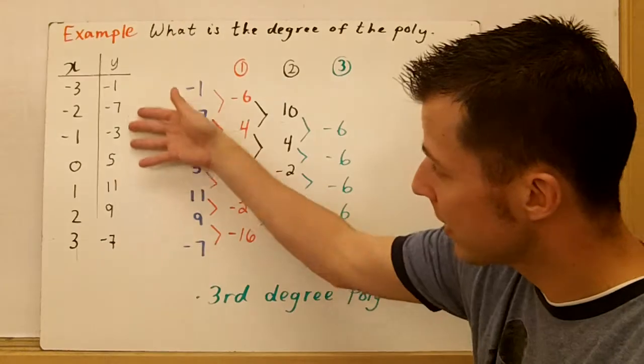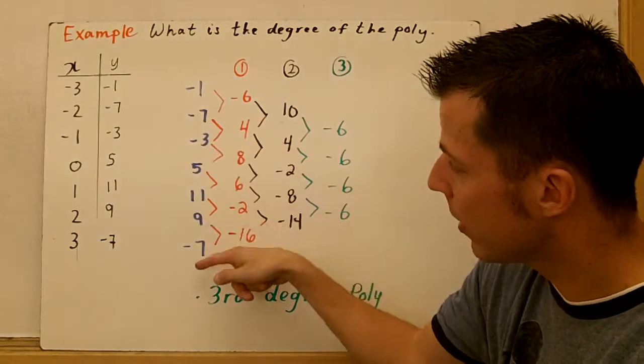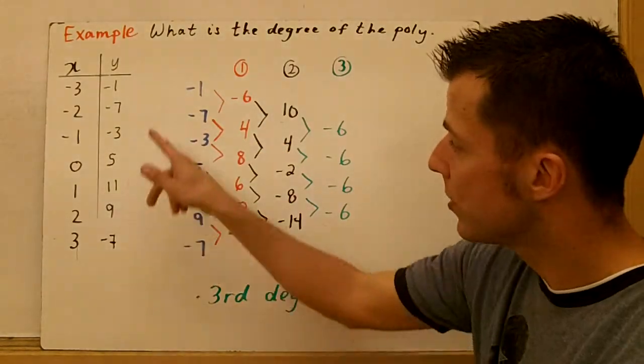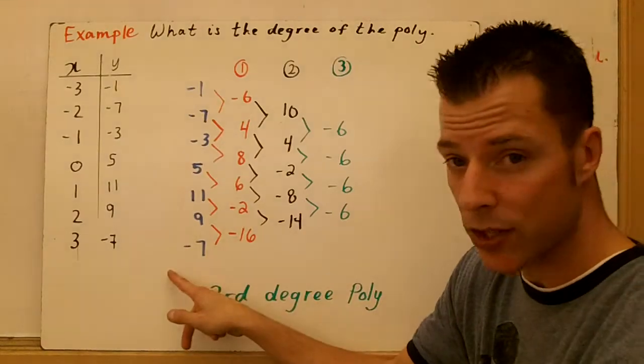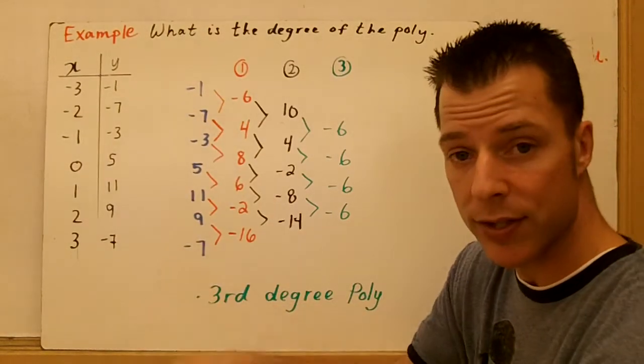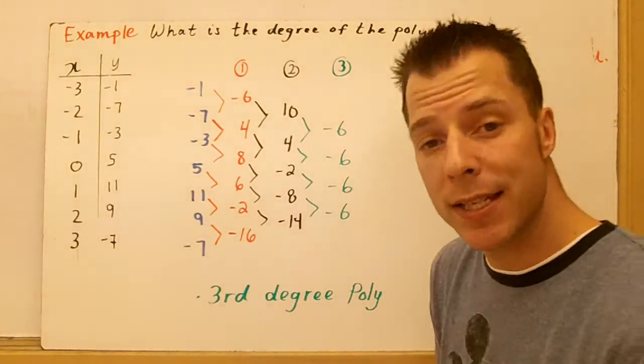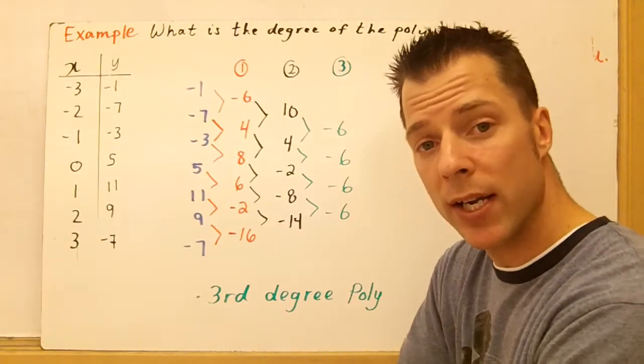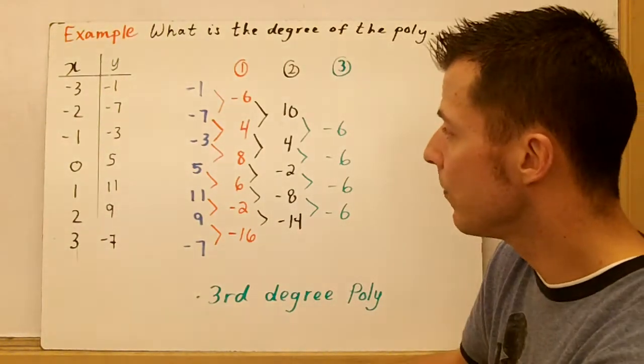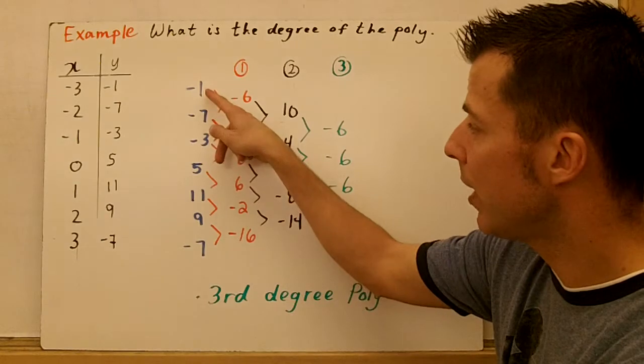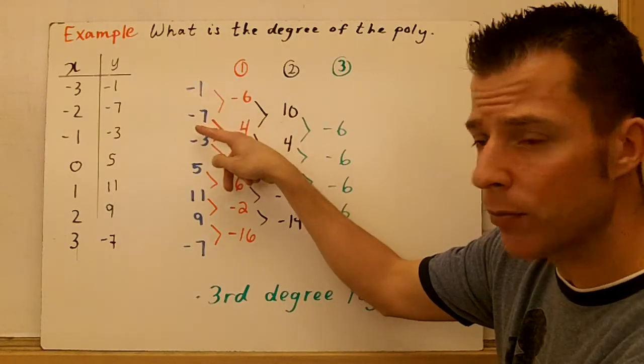So, here's my table. In blue, I have rewritten my y coordinates. Notice, I haven't taken any differences yet, so that doesn't count as the first difference. So, what we have to do is take the differences between the y coordinates. And what we do is subtract the term above from the term below.